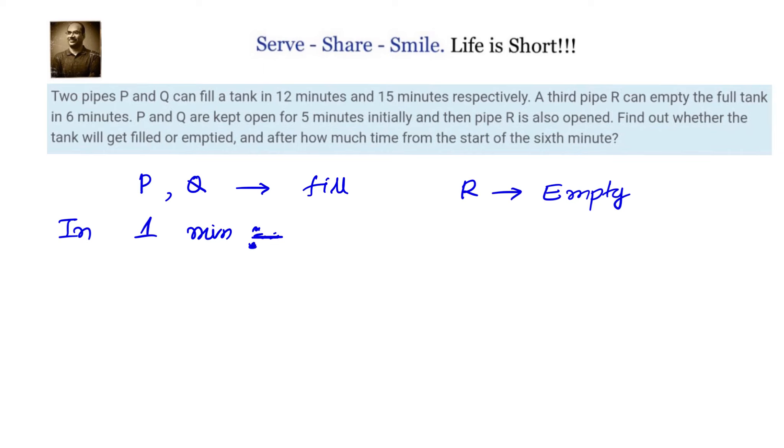To understand that let us see what is the work done by these pipes in one minute. In one minute P and Q together will fill 1 by 12 plus 1 by 15th part of the tank whereas R will empty 1 by 6th part of the tank. So filling they are doing 0.15 part of the tank and emptying is 0.167 approximately. So you can see that emptying is more than filling. That means if P, Q and R all the three are open then the tank will get emptied.